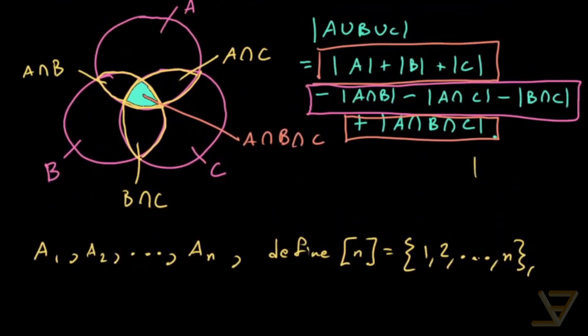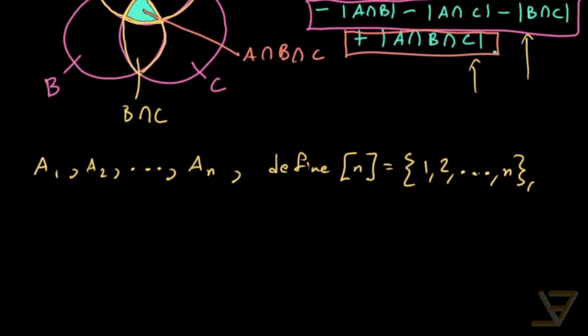In general, what's true is that if we have finite sets A1, A2, all the way through to An, and we define this square bracket of n to be the first n positive integers, so 1, 2, all the way through to n. And we're gonna, these things in the boxes here, this box, this box, and this box, we're gonna define it in general.